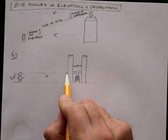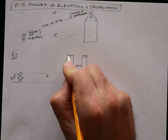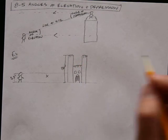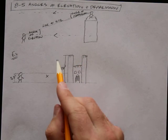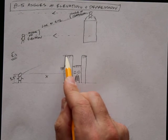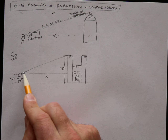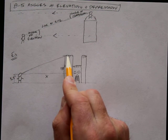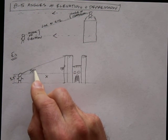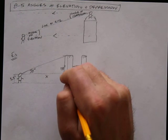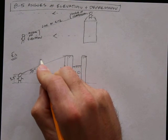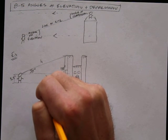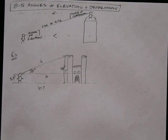So this guy is x distance away from this castle. The castle is 190 feet tall. So this is not to scale, obviously. And the angle that this guy is looking at from the horizontal to the top, this angle is 38 degrees. So this is a 90 degree angle here. And this would be the hypotenuse here. I want to know, what does x equal? How far is he away from this castle?